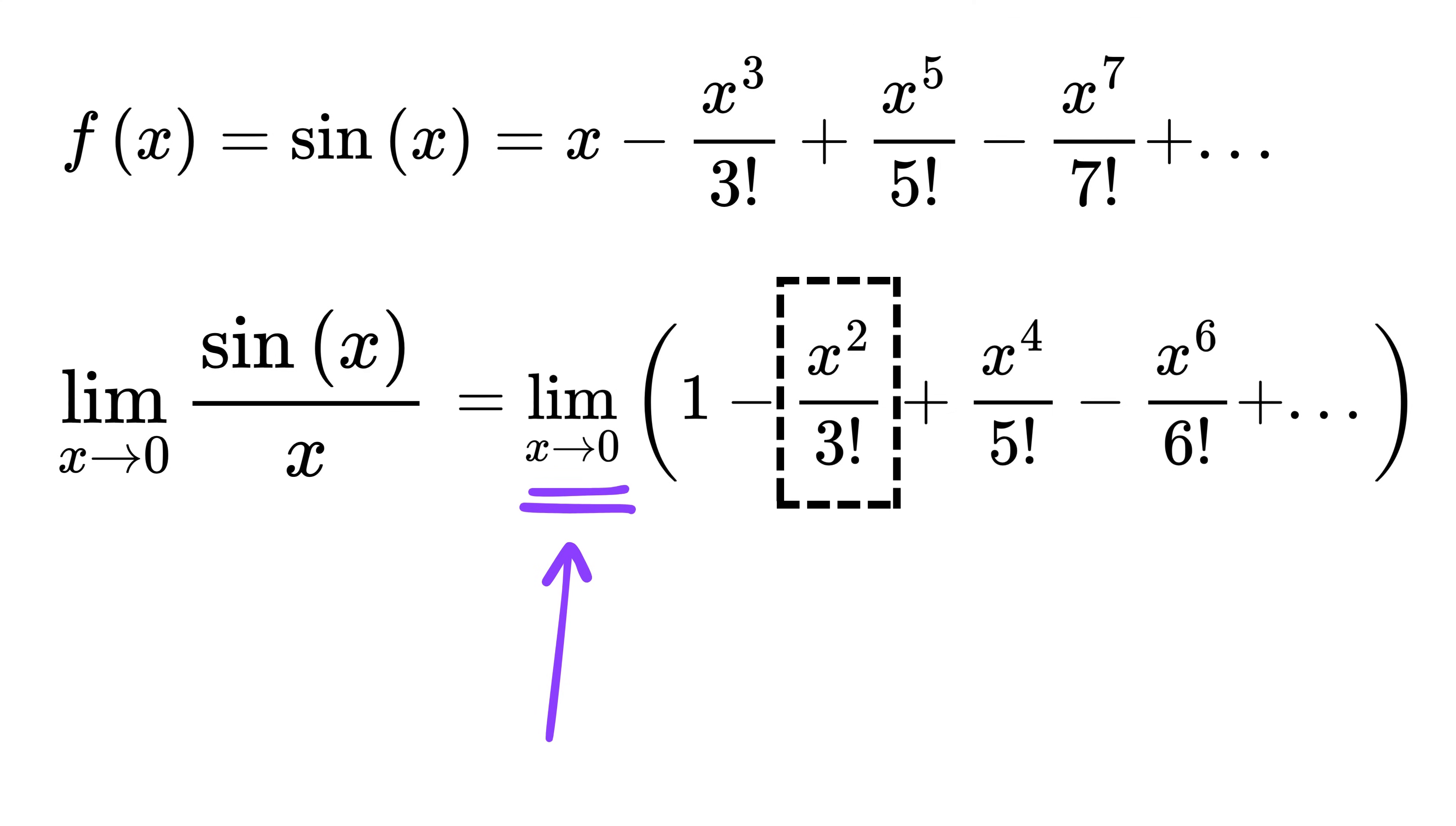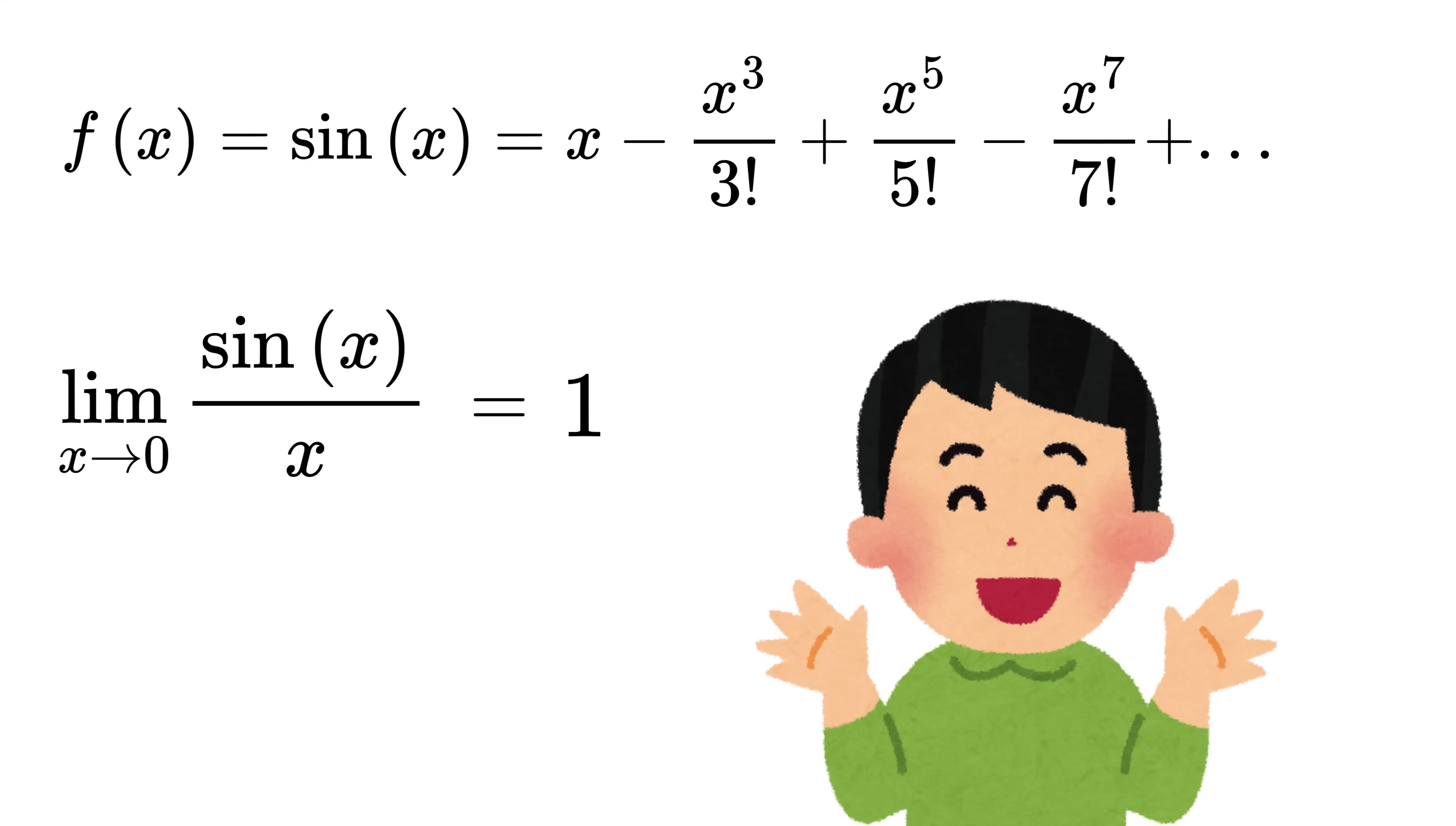Now since x is a very small number, very close to zero, what happens to x², x⁴, x⁶? All of them become super duper tiny, almost zero. So all these terms vanish, and only the first term remains, which is 1. And folks, that's why when x is very small, sin(x) divided by x is very close to 1.